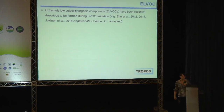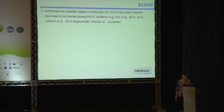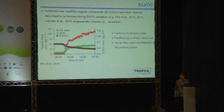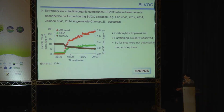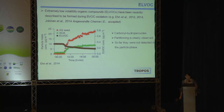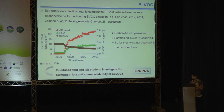Thomas already gave a really good introduction to the extremely low volatility organic compounds, so I don't want to repeat everything. Basically I want to point out the motivation of this talk. Thomas already explained that from the alpha-pinene ozonolysis a huge amount of ELVOCs are formed, and when you turn on the seed particles — shown in red — the SOA formation starts and the organic mass increases. We know this about the ELVOCs but we have no idea what happens in the particle phase, and therefore this study was addressed. We wanted to know how the ELVOCs are formed, what their fate is after condensation, and also how they look.